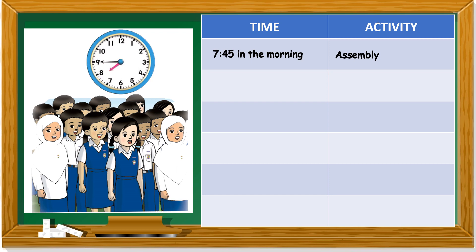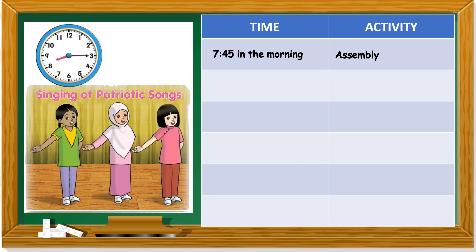The second activity — look at the time first. The hour hand points between eight and nine, so it's eight something. The minute hand points to three. Three times five is fifteen. So it's 8:15 in the morning. We don't do this activity at night, so that is why we say it's in the morning. What are they doing? Singing of patriotic songs.